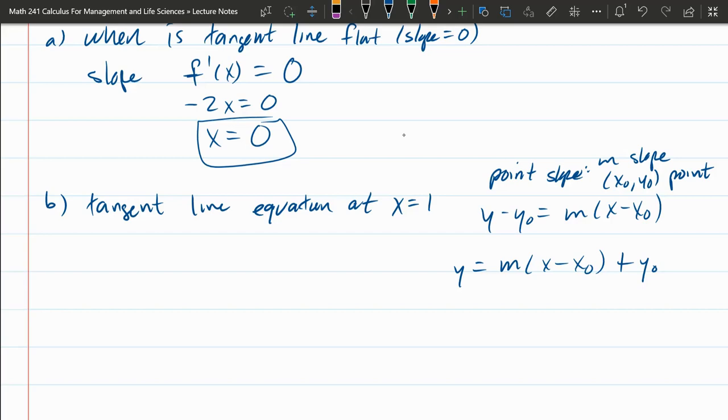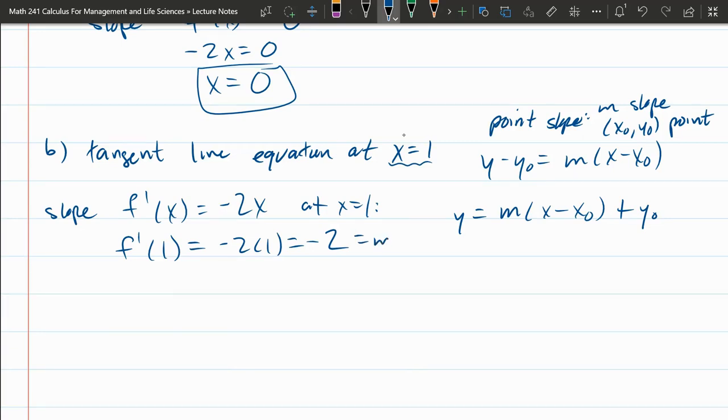We need a slope. Remember, slope is f prime of x, which is negative 2x. We calculated earlier. And now, this is at x equals 1. So we're plugging in 1 for our x value, negative 2 times 1, negative 2. So that's our slope right there. Now, we need our x-naught, y-naught. We need our point.